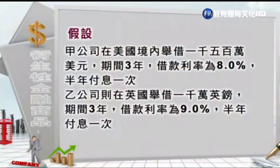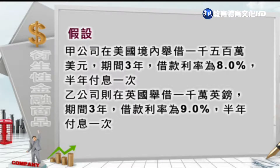这样双方进行货币交换的结果，可以让甲乙两个公司共同分享两地信用价差的差距。因为货币交换契约必须指明两种货币的名目本金，而且在期初跟期末都要进行名目本金的交换。以下是假设：甲公司在美国境内举借1500万的美元，期间是三年，借款利率是8%，半年复息一次。乙公司在英国举借1000万英镑，期间是三年，借款利率是9%，半年复息一次。